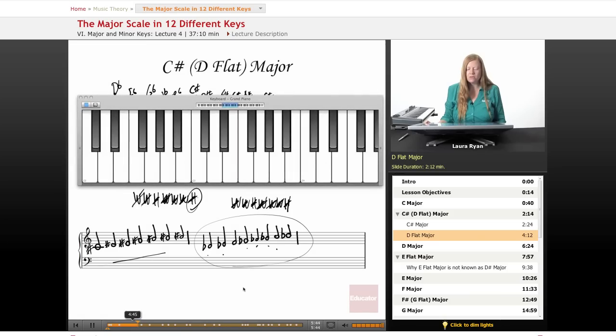Let's call up the keyboard and think about it both ways. C sharp, D sharp, E sharp, F sharp, G sharp, A sharp, B sharp, C sharp. Let's think about it as D flat. D flat, E flat, F, G flat, A flat, B flat, C, D flat. So D flat feels a little easier to think about and play than C sharp.